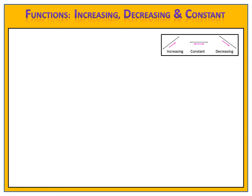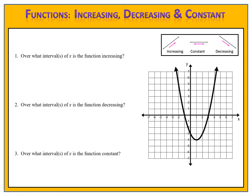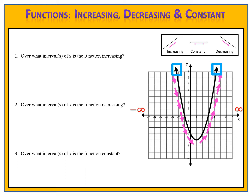Now we're ready for another example. Here we have the graph of a function. We want to find the intervals where the function is increasing, decreasing, and constant. We begin by tracing across the graph with our finger from left to right. At first the graph is decreasing. Then we hit a turning point and change direction — the graph then begins to increase. We notice at the end of the graph we have arrows, which means we have to add our negative infinity and positive infinity to the graph, because this graph continues forever.